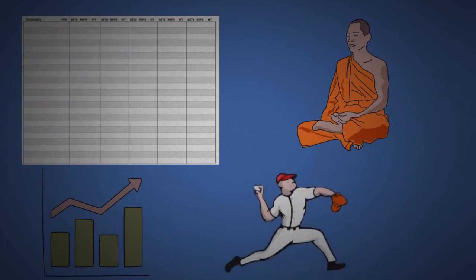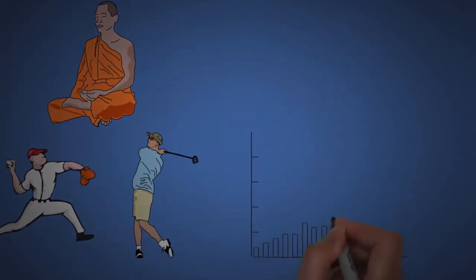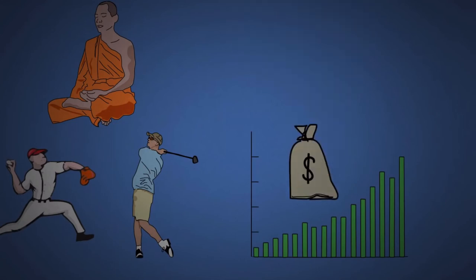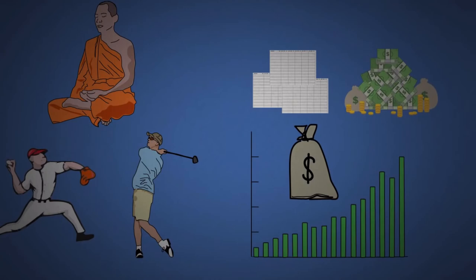Professional athletes track everything. Pitchers know their stats on every pitch in their repertoire. Golfers even have more metrics on their swings. Athletes know that when their stats improve, they win more games and earn more in endorsement deals. Tracking a lot of small things can lead to big payoffs.